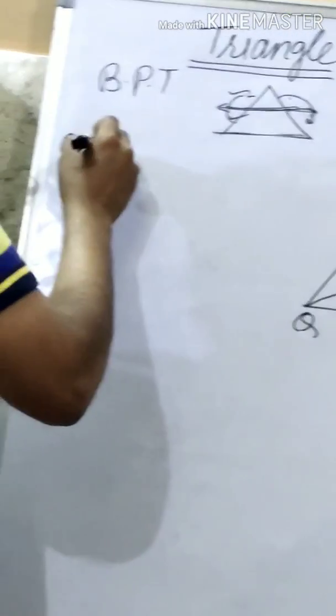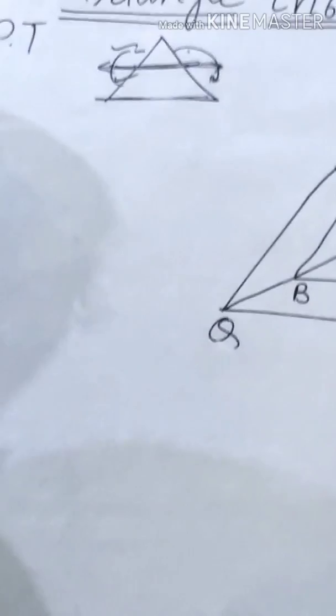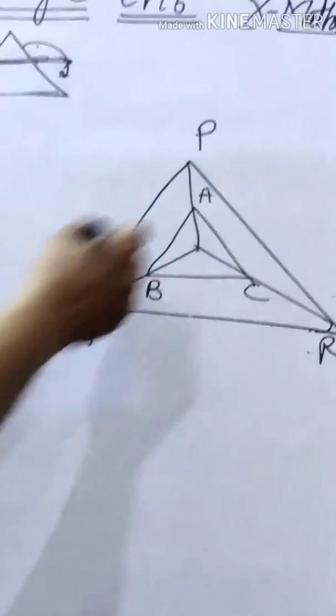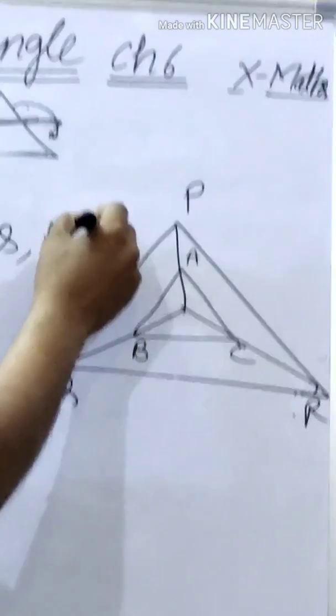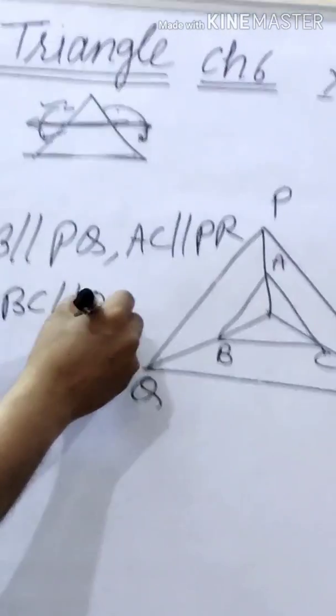In question number 6, the figure shows points A, B, C on OP, OQ, and OR respectively, such that AB is parallel to PQ and AC is parallel to PR. You have to prove that BC is parallel to QR.